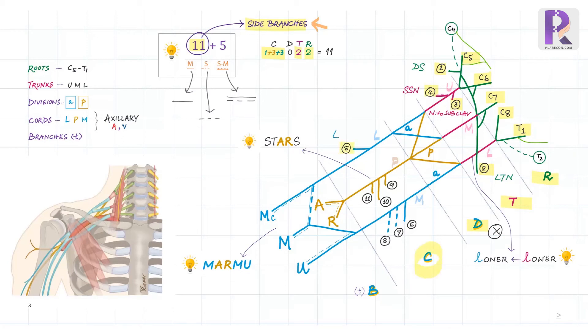The lateral cord gives the lateral pectoral nerve, whereas the medial cord gives the medial pectoral nerve, followed by two cutaneous nerves, the medial cutaneous nerve of arm and forearm. The posterior cord gives three branches, the upper, middle, and lower subscapular nerves. The middle subscapular is also called thoracodorsal nerve. The branches of the posterior cord can be remembered by the mnemonic, STARS.